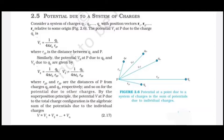The potential at point P due to charge q1 is V1 = (1/4πε₀)(q1/r1p) = k·q1/r1p. Similarly, V2 = k·q2/r2p, V3 = (1/4πε₀)(q3/r3p), and Vn = k·qn/rnp. Since potential is a scalar quantity, we can perform scalar addition of all contributions.